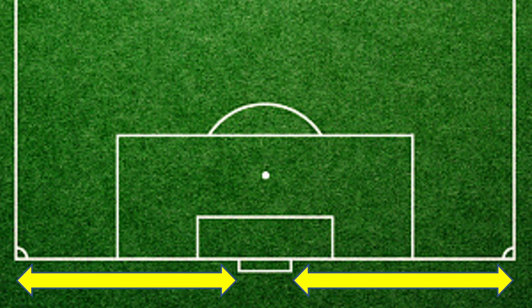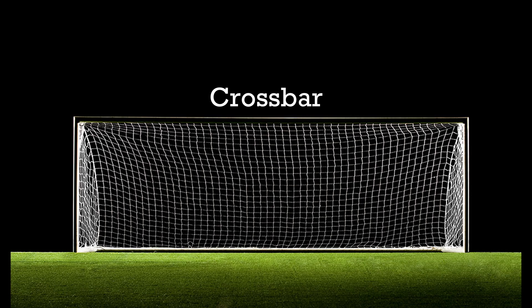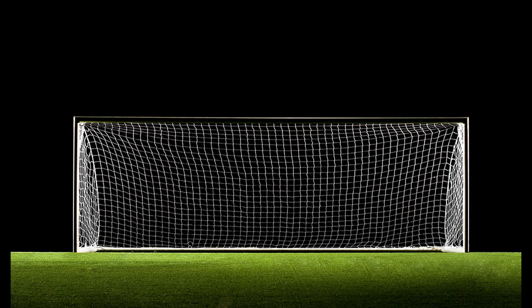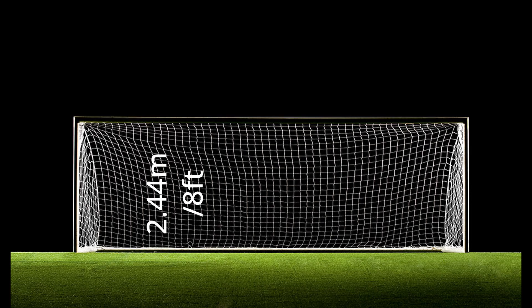So, moving on — goals are placed at the center of each goal line. These consist of two upright posts placed equidistant from the corner flag post, joined at the top by a horizontal crossbar. The inner edges of the posts are regulated to be 7.32 meters or 24 feet wide, and the lower edge of the crossbar is elevated to 2.44 meters or 8 feet above the pitch.